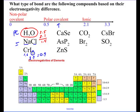Calcium and selenium. Calcium is 1.0. Selenium is 2.4. That's going to be polar covalent.